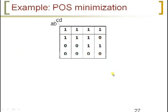Here we have three sum terms. To get the sum terms we use OR gates, and these are the inputs to the OR gates. All three sum terms are given as input to an AND gate, because it is a product of sums. This is how to minimize the POS — that is, product of sums.